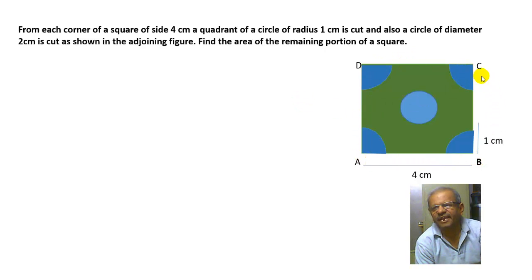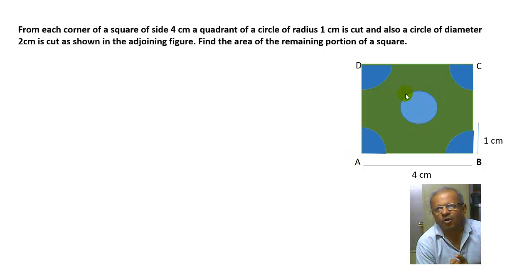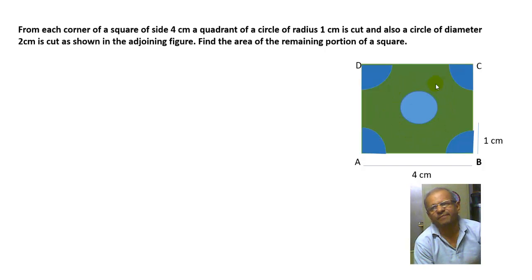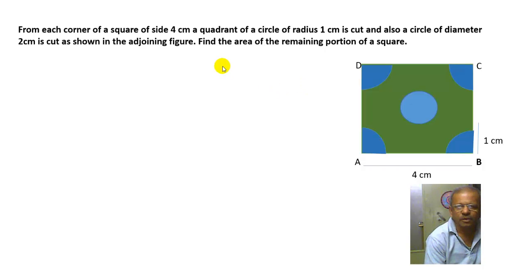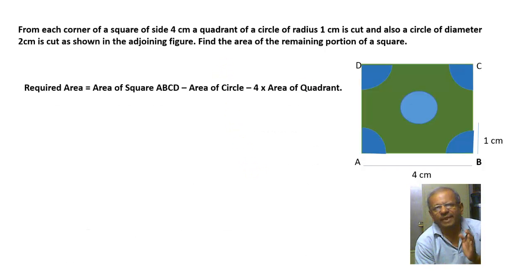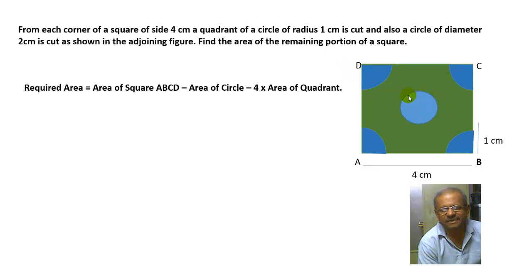In the figure, ABCD is a square. From each corner — A, B, C, and D — a quadrant of radius 1 centimeter is cut, and a circle of diameter 2 centimeters is cut from the center. The remaining portion is the greenish portion in the figure, and we have to find the area of this remaining portion. The required area equals the area of square ABCD minus the area of the circle at the center.